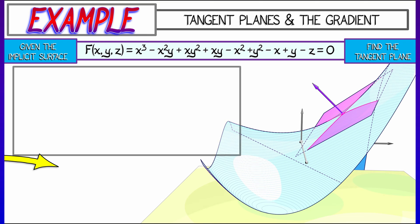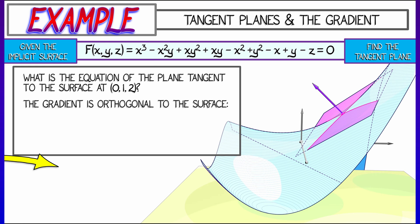What's the tangent plane to this surface at the point zero comma one comma two? Check and make sure that that point satisfies this equation. Indeed, it does.